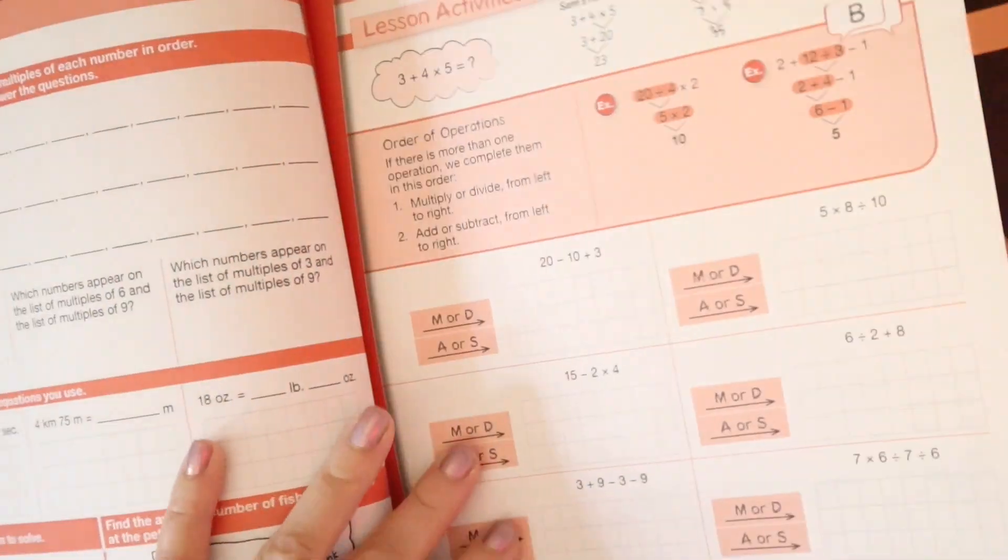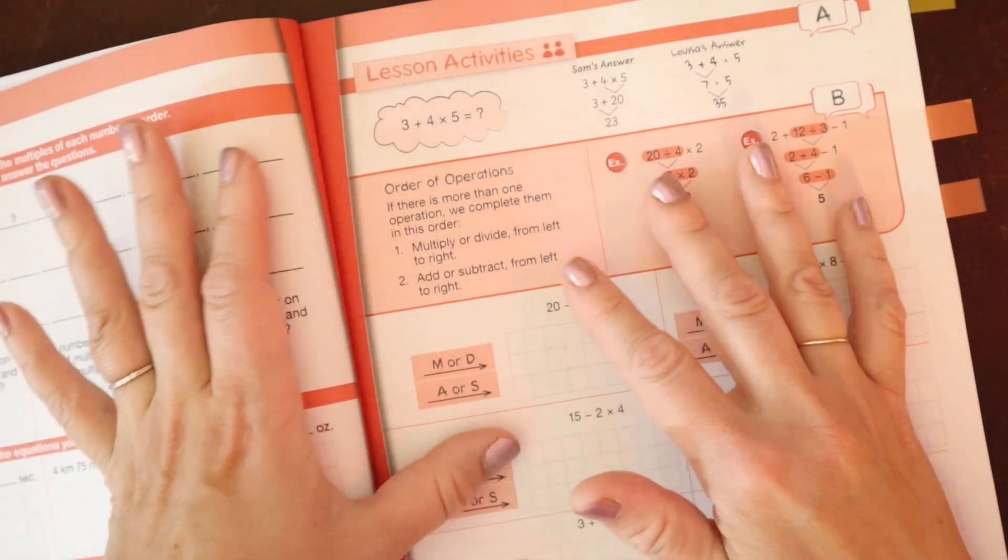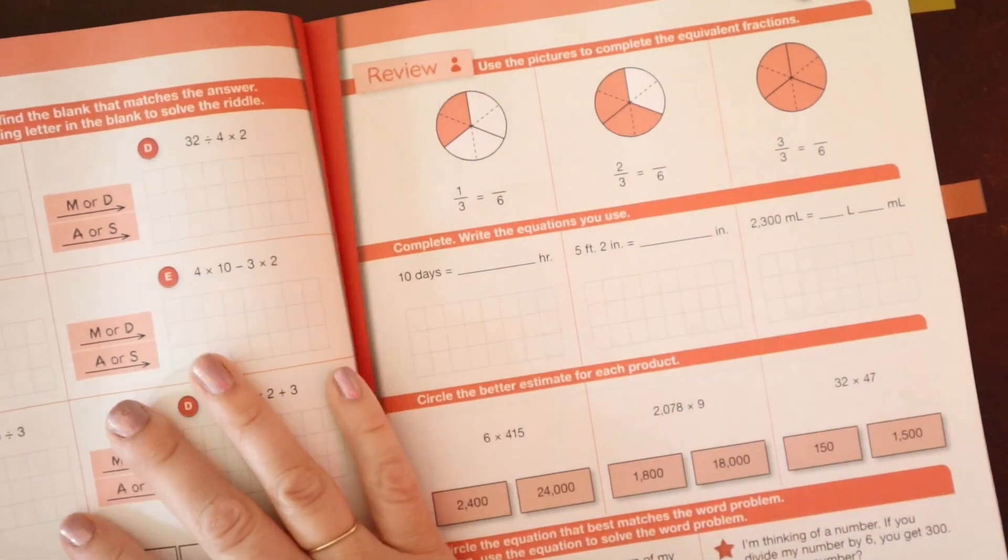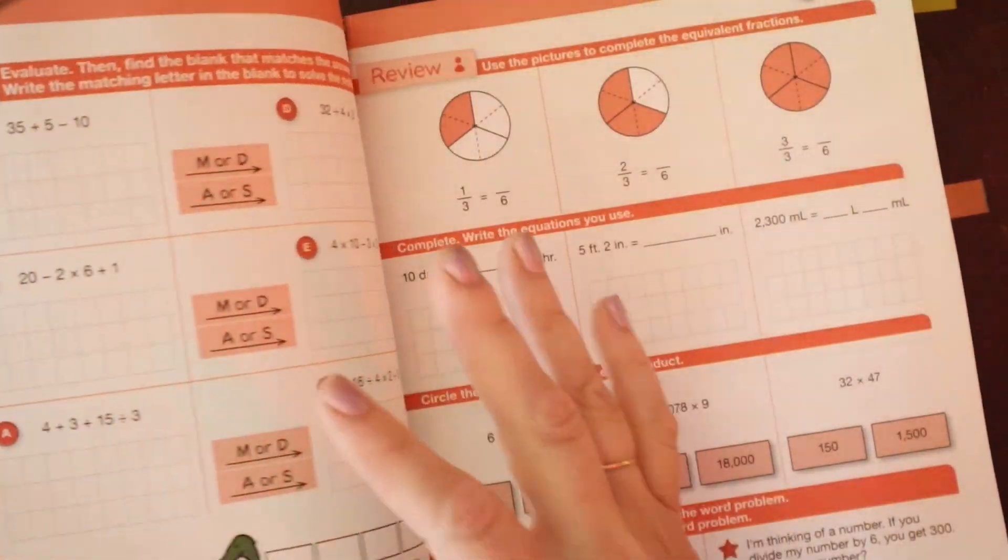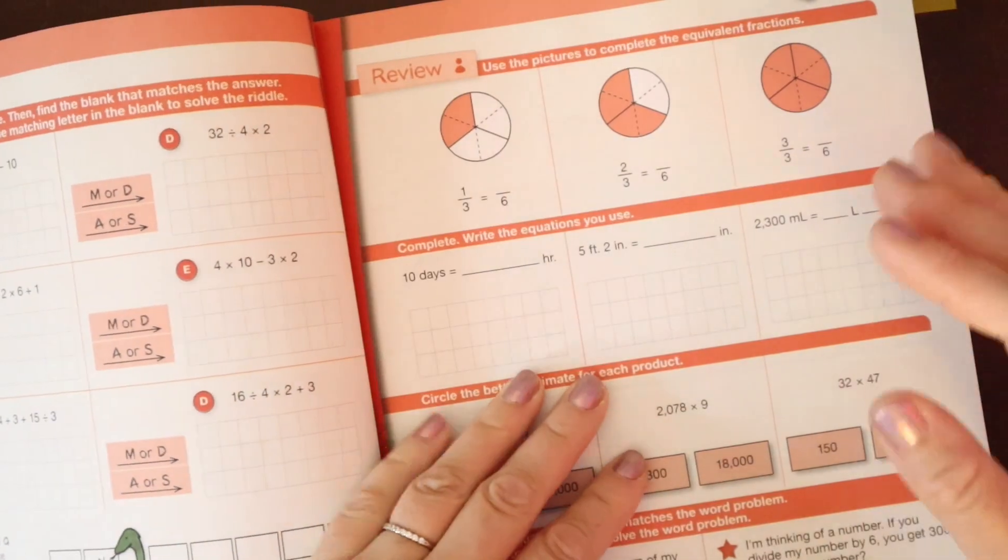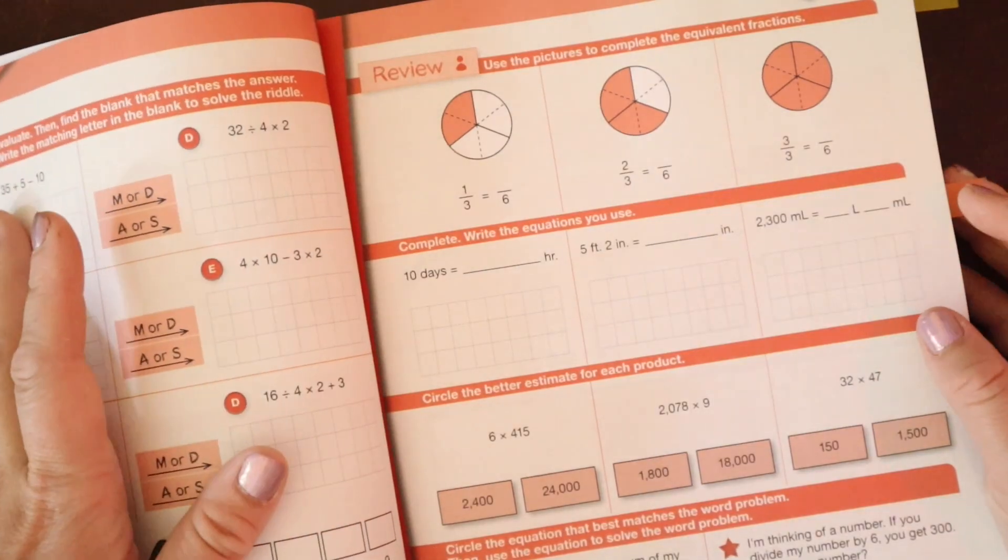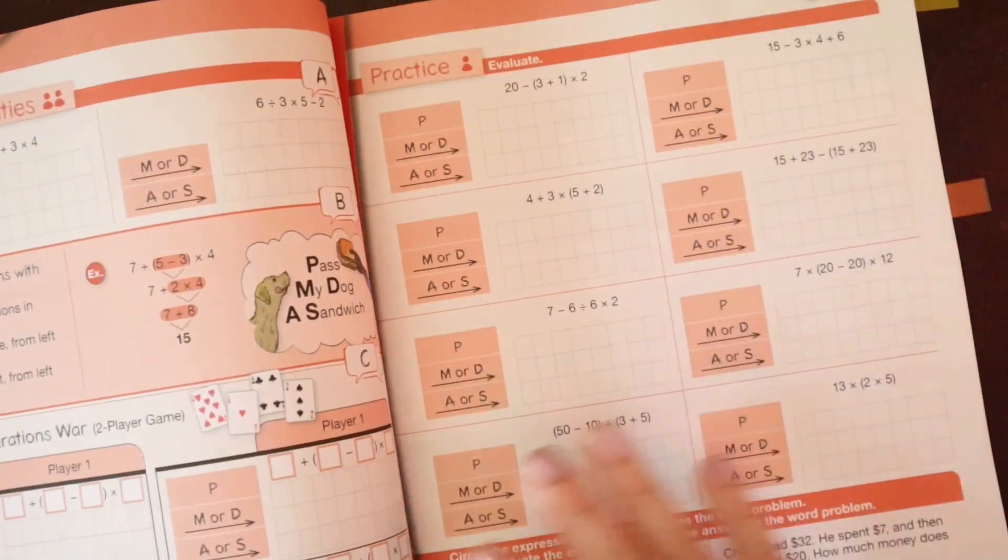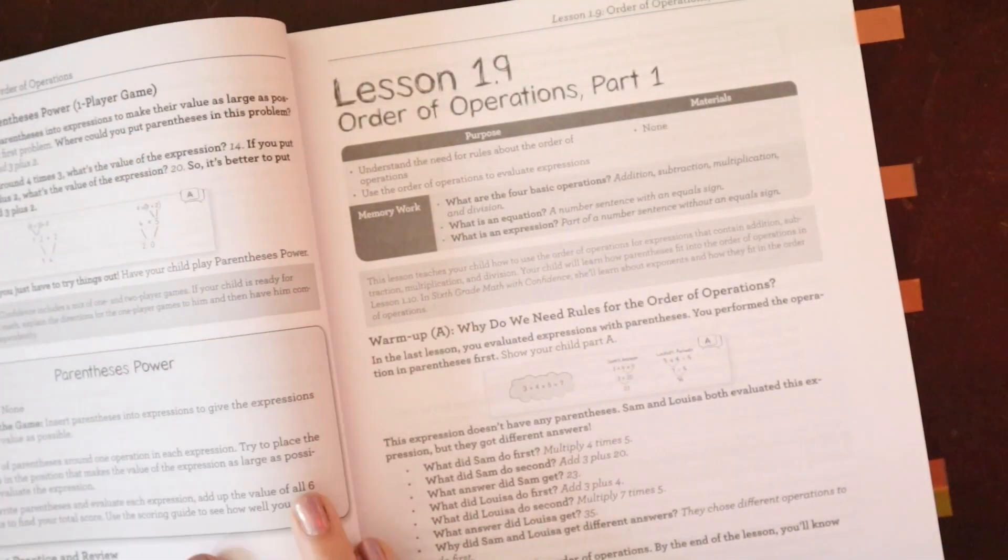The way our family does math with confidence, because I have several children, is I do the math lesson with my daughter, who's going to be in third grade math this year first. And then I assign her her practice page. And then I do the math lesson with my son while my daughter is doing her practice page. And then he does his practice page while I start math with my youngest, who is continuing with kindergarten math with confidence. The review page I assign as part of morning work. So he will have already done, let's say it's Monday, he does lesson 1.9. Tuesday morning, as part of morning work, he does a review page for 1.9. So keeping in mind, you don't have to do all of that in one big chunk.